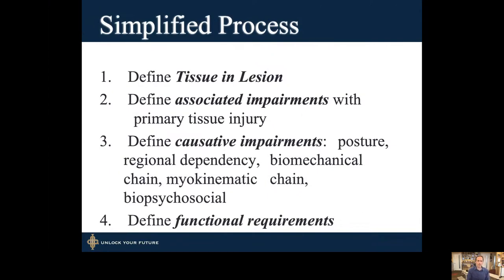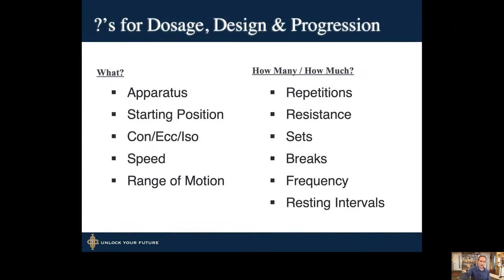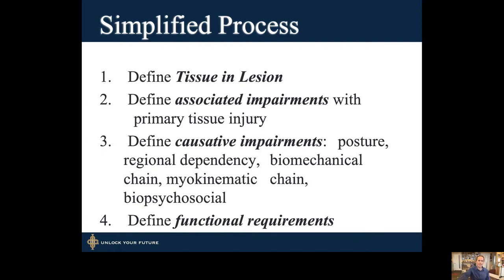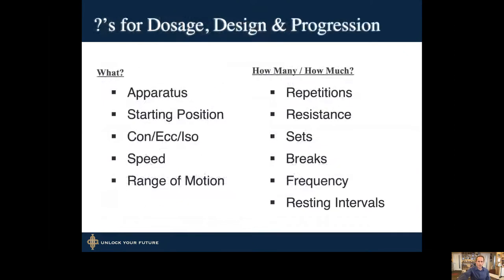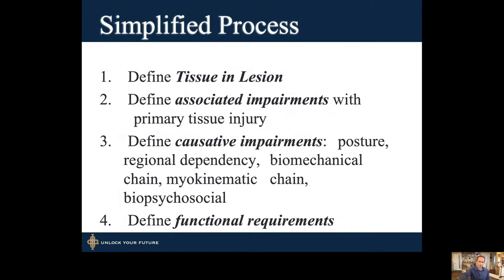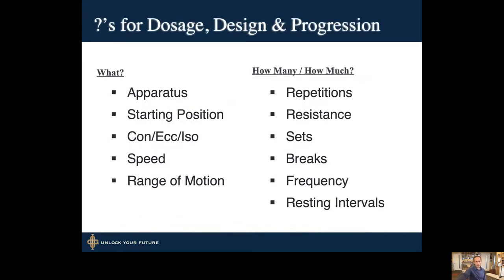We are going to define the tissue and lesion as we've done, figure out what the impairments are, and deal with those impairments — including any causative impairments such as posture or other regional biomechanical dependencies. Finally, we're going to define the functional requirements of the exercise, and those functional requirements are going to help us dose the exercise appropriately. There are many questions that help you optimize your exercise program — the apparatus used, the starting position, type of contraction (concentric, eccentric, isometric), speed of contraction, and position within the range of motion.